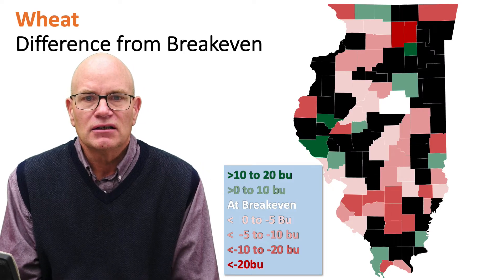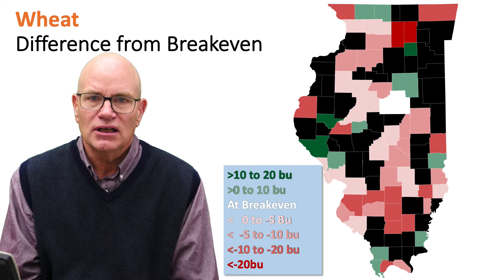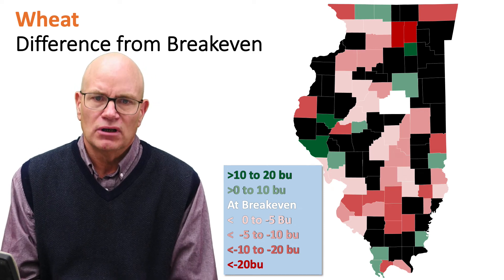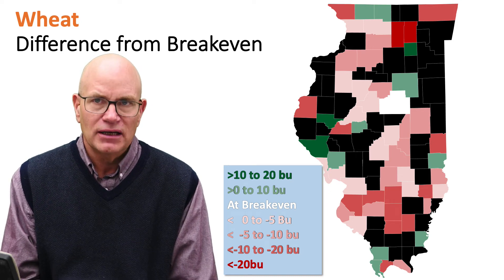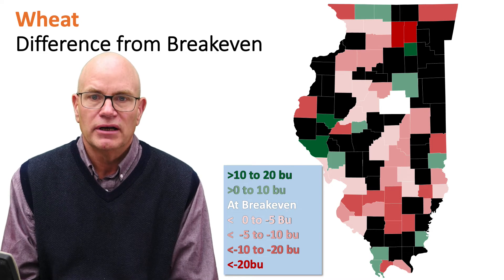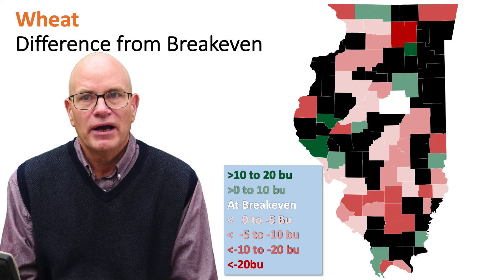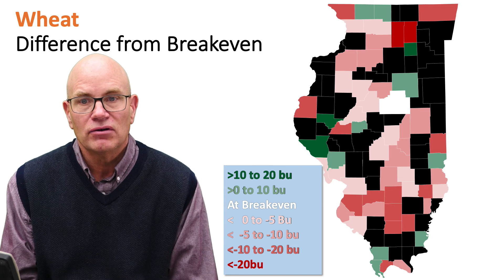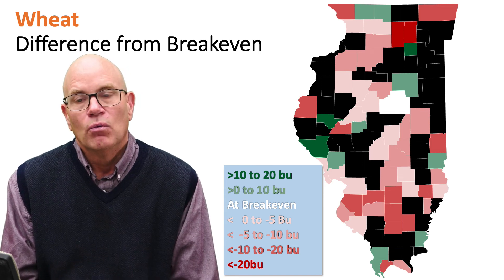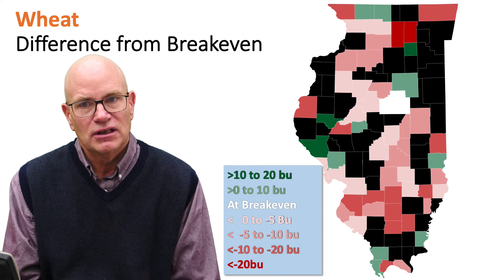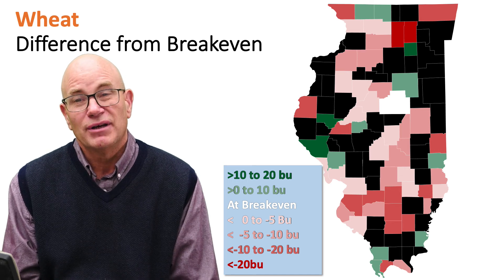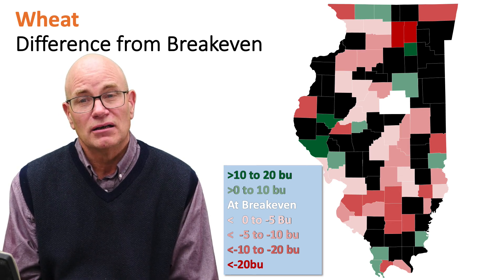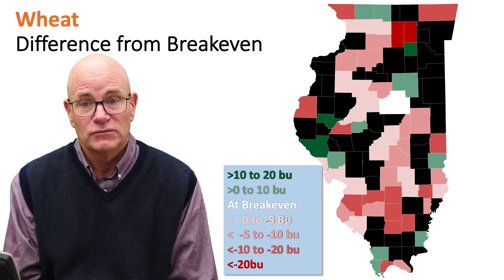This map shows wheat. In this case we already have NASS yields for wheat released. The green areas indicate that NASS yields are above the break-even yield, so those counties would not have payments. If you're in the reddish or pink and red areas, ARC county is projected to make payments. We would suggest that even in those areas, you take a hard look at PLC, which is the alternative to ARC county, because PLC will usually make larger payments than ARC county.